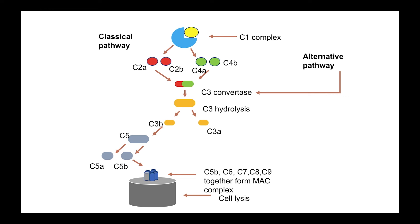The MAC complex ultimately clears the target pathogen by causing cell lysis. C1Q binds to the antigen-antibody complex and causes breaking of C2 and C4 into C2A, C2B, C4A, and C4B respectively. C2A and C4B will come together and form C3 convertase. C3 convertase will further be hydrolyzed and broken down into C3B and C3A. C3B will ultimately cleave C5 protein. C5B will bind to the surface of a pathogen and recruit C6, C7, C8, and C9, which together form the membrane attack complex or MAC. This creates a hole in the surface of the target pathogen and causes apoptosis via cell lysis.